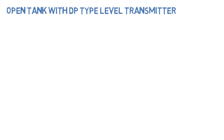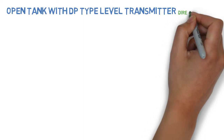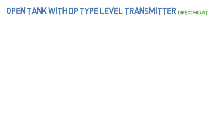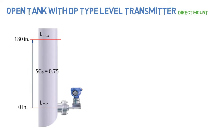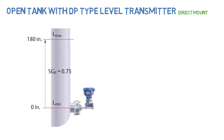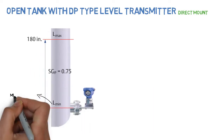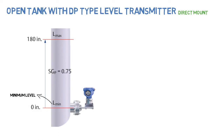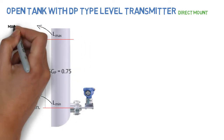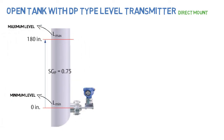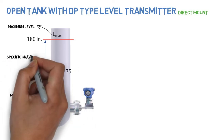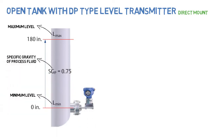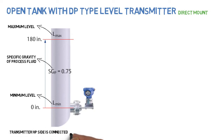Open tank with DP type level transmitter, direct mount. Minimum level, maximum level, specific gravity of process fluid. Transmitter HP side is connected at minimum level.